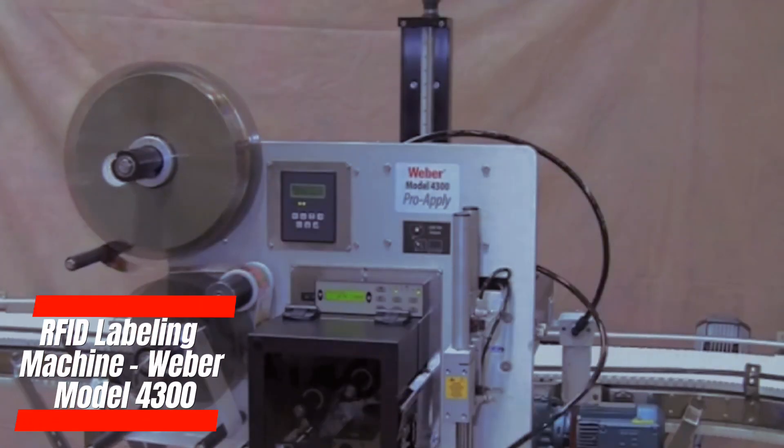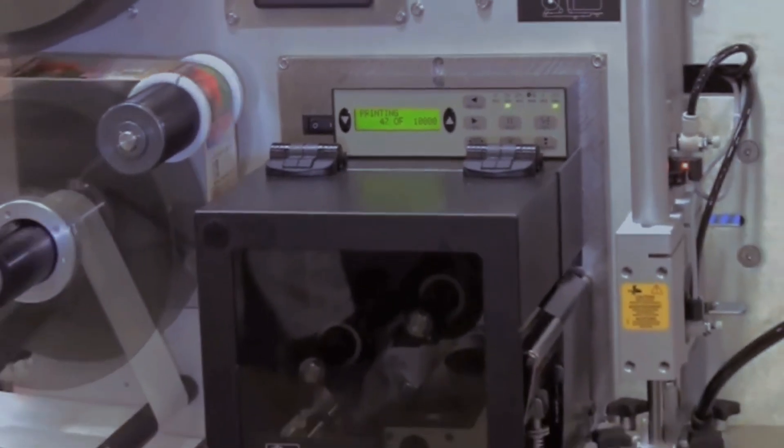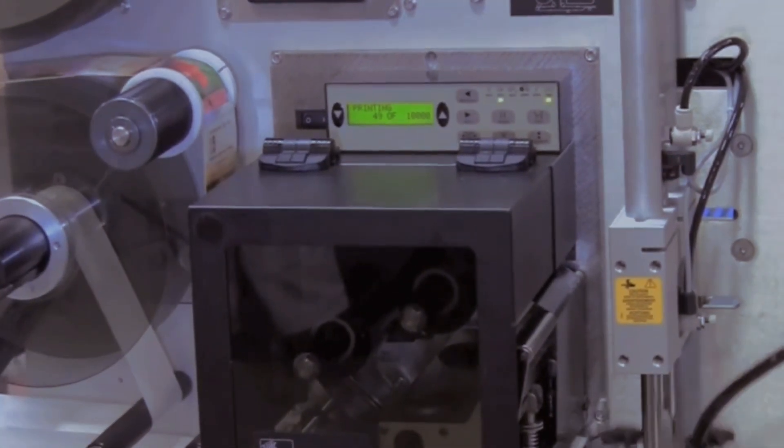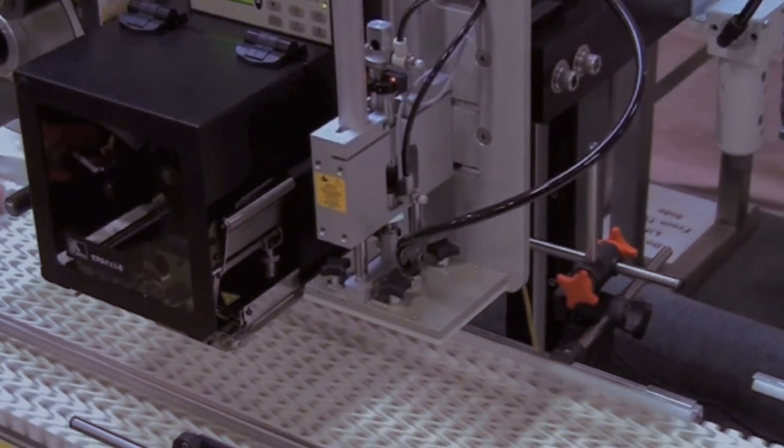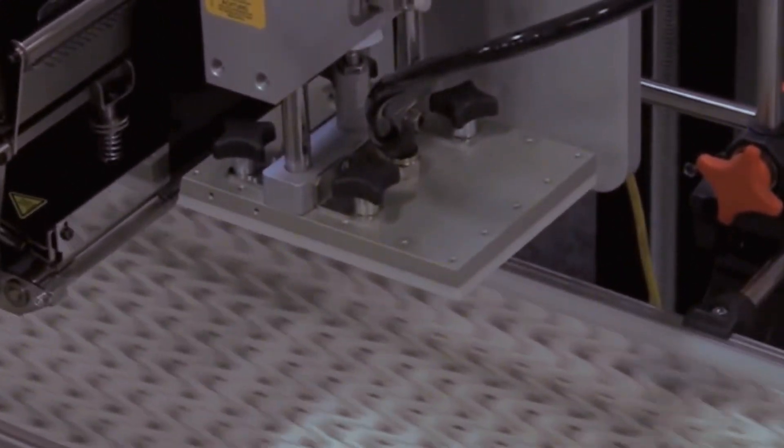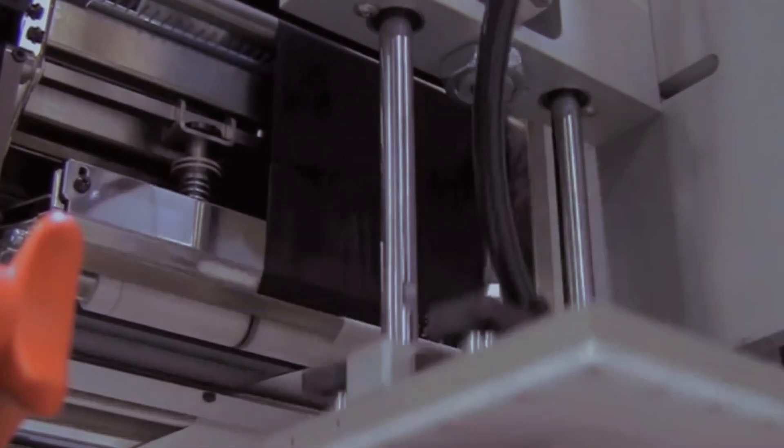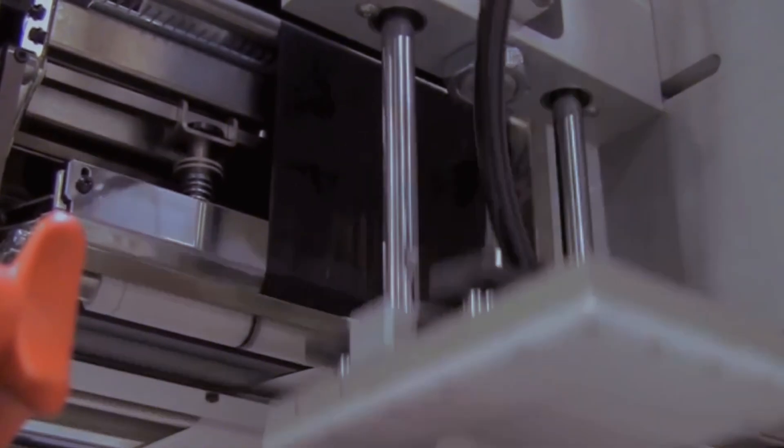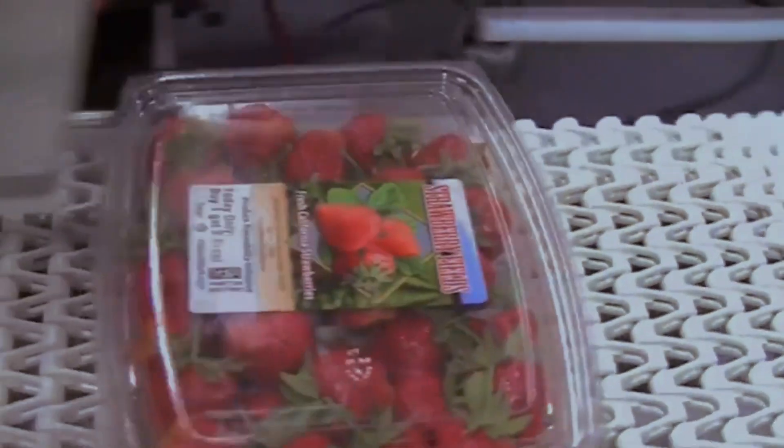The Weber Model 4300 is a cutting-edge RFID labeling machine designed to enhance inventory management and supply chain visibility in the food manufacturing industry. Its integrated RFID technology enables real-time tracking and tracing of products throughout the supply chain, improving operational efficiency and reducing instances of inventory shrinkage or loss. The Model 4300's high-speed labeling capabilities and precision application ensure accurate encoding and placement of RFID tags on packaging materials.